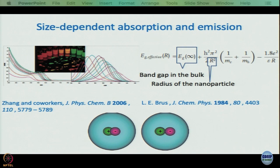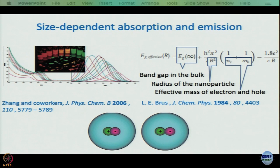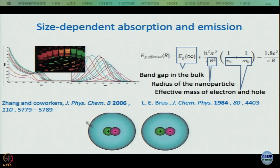To clarify terms: Eg(∞) is the bulk band gap; R is the radius of the nanoparticle; mₑ and mₕ are effective masses of electron and hole. The effective mass of a hole — even though a hole is just a vacancy — can actually be calculated by a well-established standard formula, long before nanoparticles were even discussed. All references for this discussion are given on every slide.